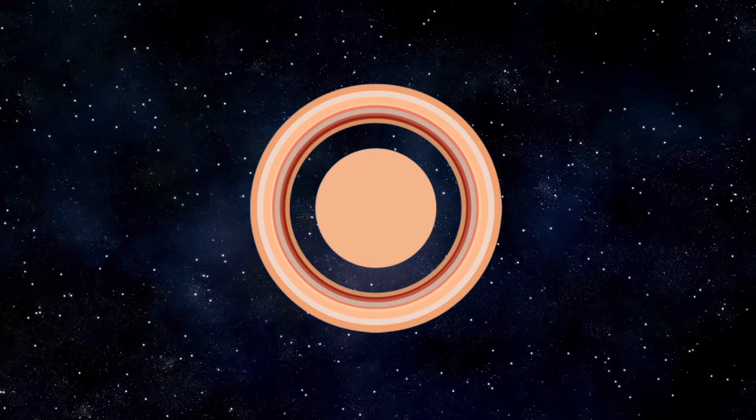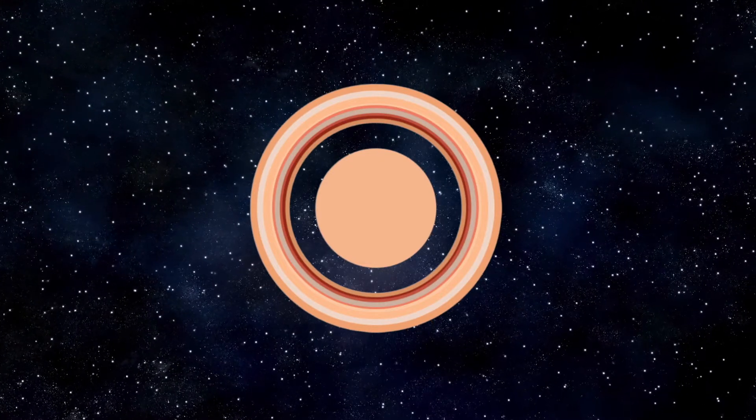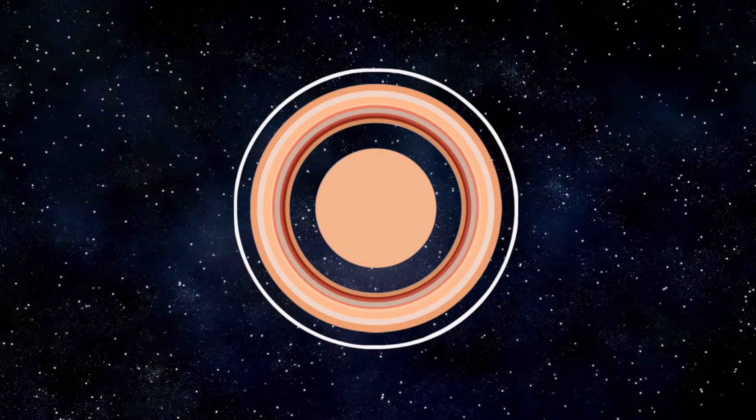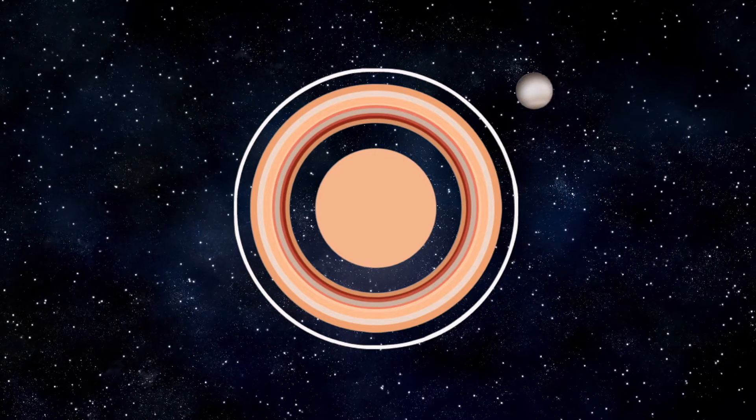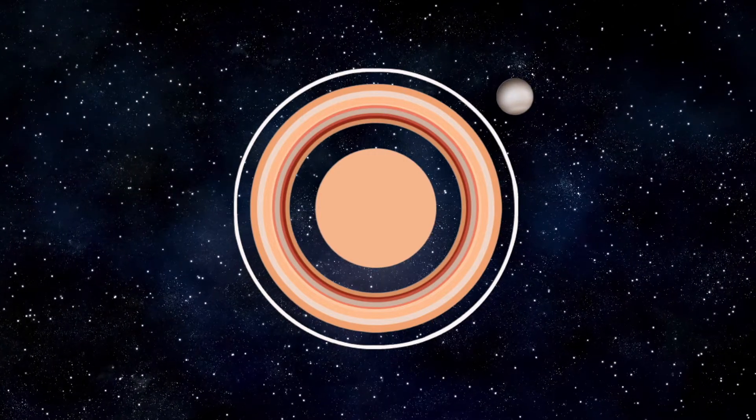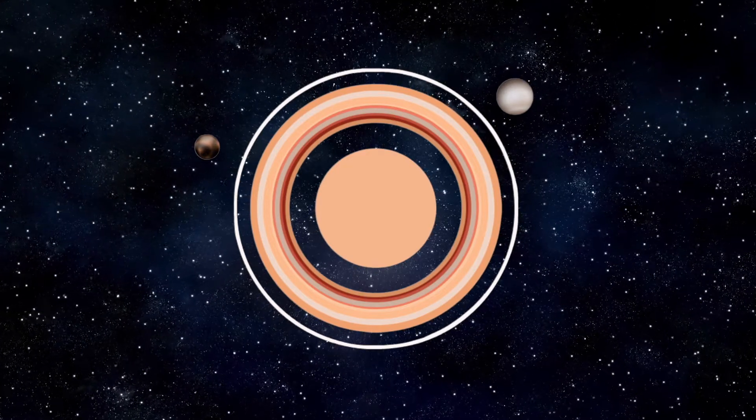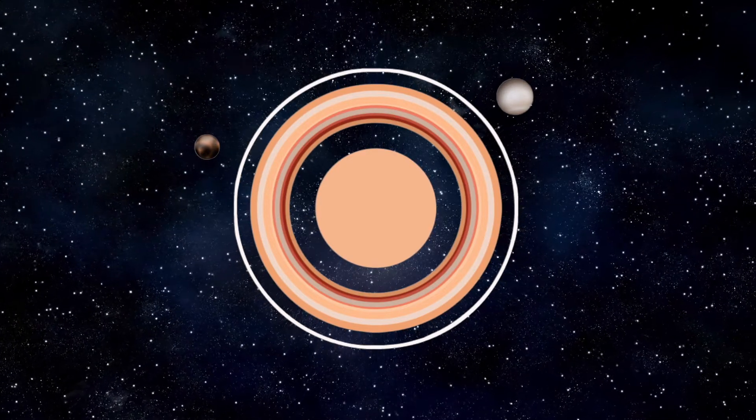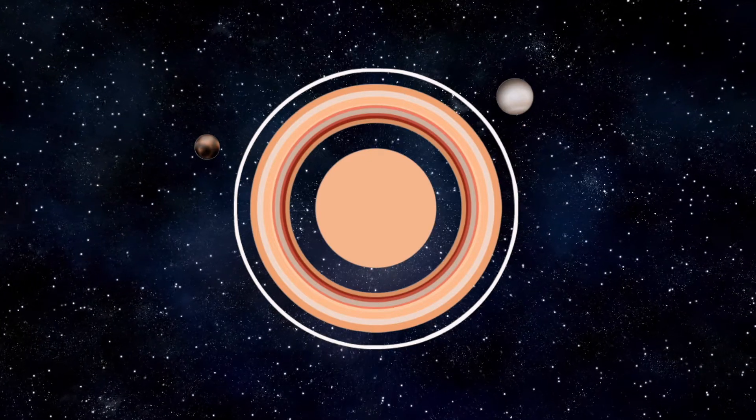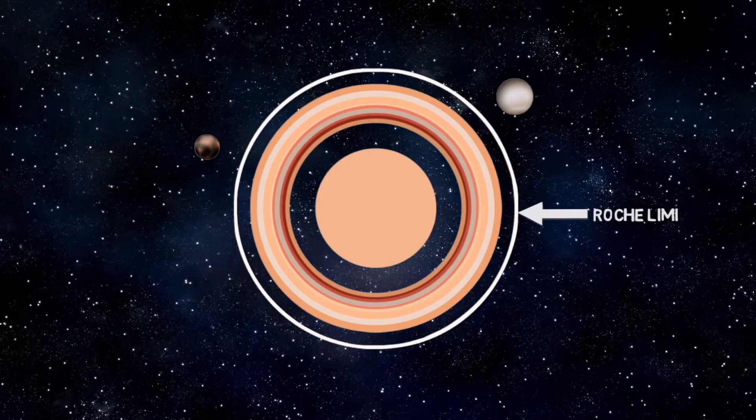A planet pulls harder on the side of the satellite that is facing it. So if a satellite gets too close, the unevenness of the attraction will likely cause it to break up, and that is apparently what happened to most of our gas giants, because with few exceptions, their rings are almost always inside the Roche limit while the moons are outside.